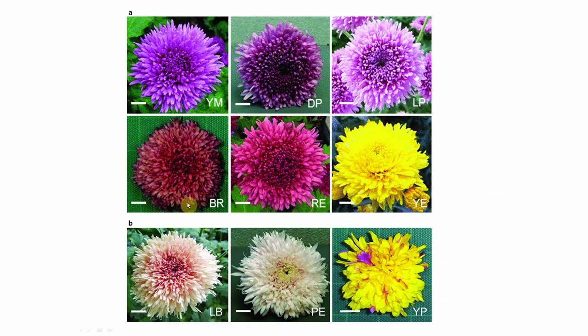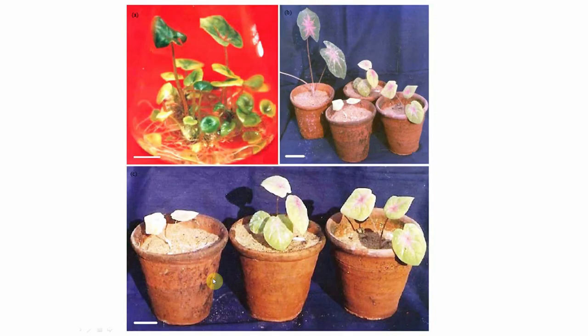Another beautiful example is the chrysanthemum variety wherein somaclonal variations have produced beautiful petal variations. There is also an example where colocasia was the mother plant — you can notice different variations produced, but they cannot be sold in a market as they have no commercial value. This underlines the very nature of somaclonal variation, which is ultimately a chance factor.